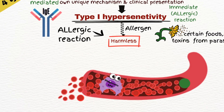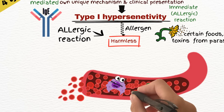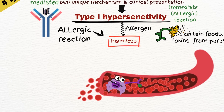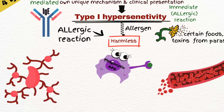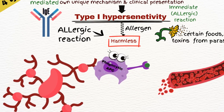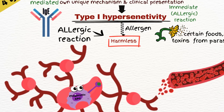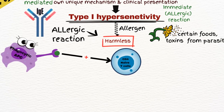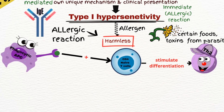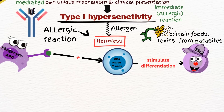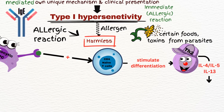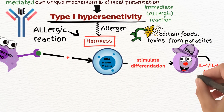Dendritic cells process the allergen and present it on their surface in conjunction with MHC class II molecules. The dendritic cells migrate to the lymph nodes, where they present the allergen-MHC complex to naive T helper cells, activating them to differentiate into T helper II cells. T helper II cells secrete cytokines such as interleukin-4, interleukin-5, and interleukin-13, which promote the activation of B cells.